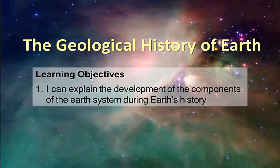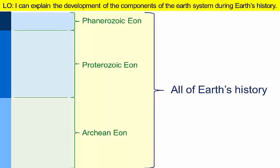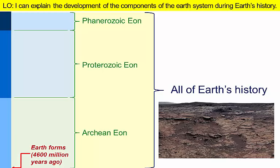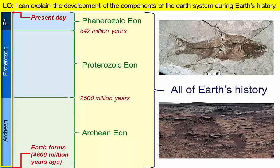Earth's history can be divided into three big chunks of time we call eons. During the first two eons, the Archean and Proterozoic, the planet's barren surface would have looked much different from today, with no plants or animals on land and no fish in the sea. It was only during the last 12% of geologic time, during the Phanerozoic eon, when Earth began to resemble the planet we see around us today. As we move through this presentation, keep an eye on the timeline along the left margin of the screen as an indicator of where we are in Earth's history.